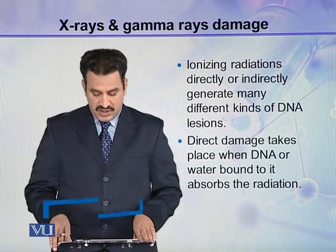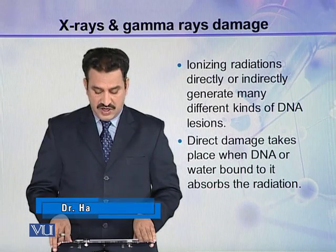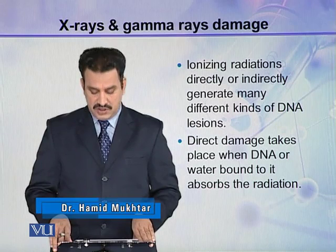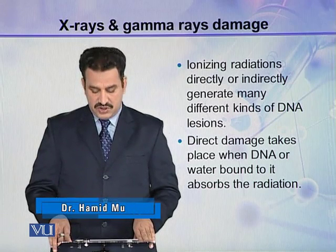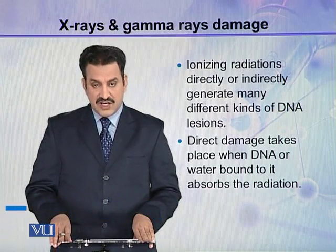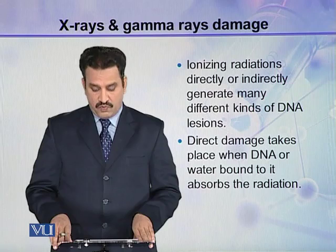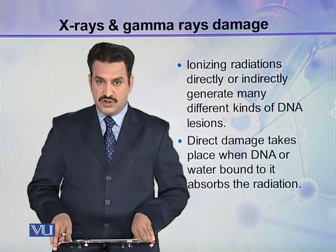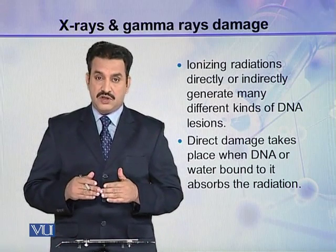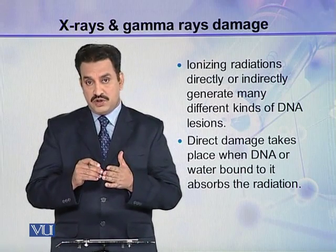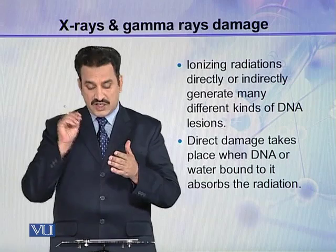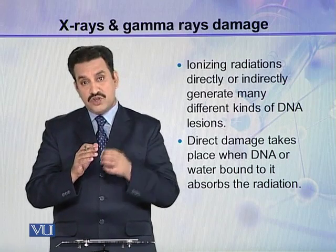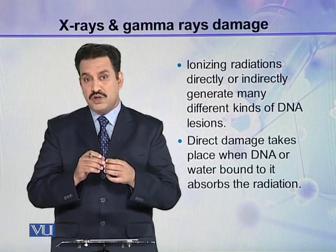Ionizing radiations directly or indirectly generate many different kinds of DNA lesions. Direct damage takes place when DNA or water bound to it absorbs the radiation. Either the radiation strikes the DNA molecule or the water molecule which is bound to the DNA molecule.